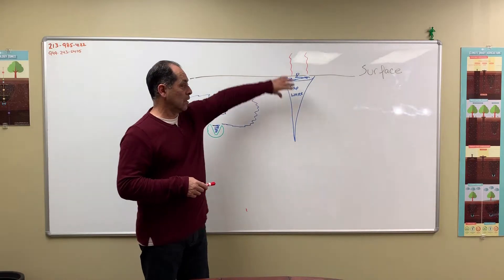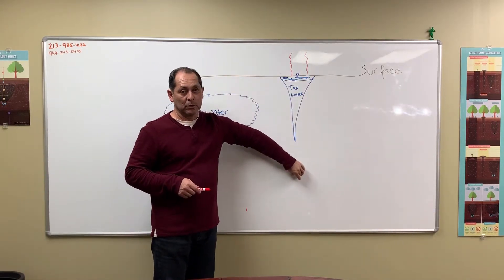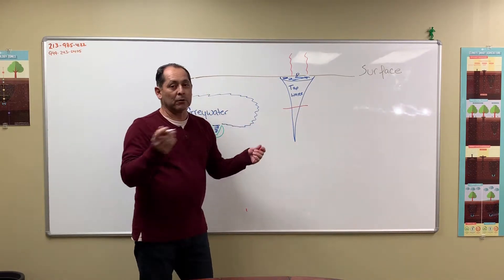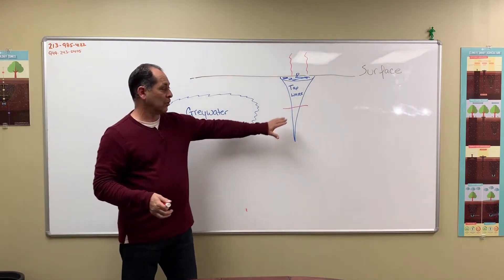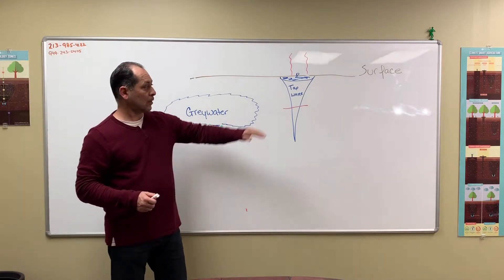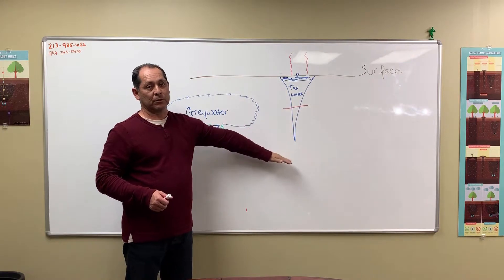Another bad thing is as this water starts to build, it creates this long plume. Once it gets past a certain point that's beyond where the roots are, the roots aren't going to go searching for it, and you lose all this water down into the subsurface of the soil. So you're losing water to evaporation and you're losing water to deep percolation.